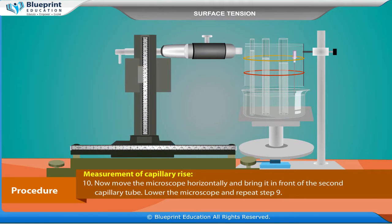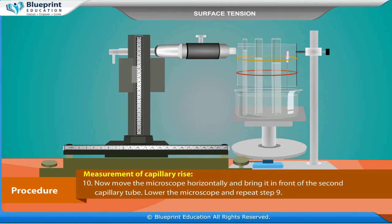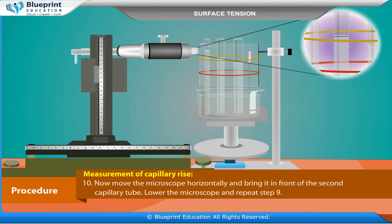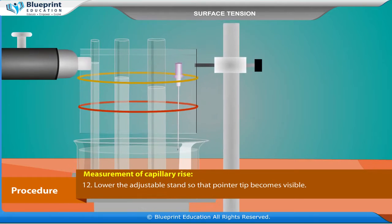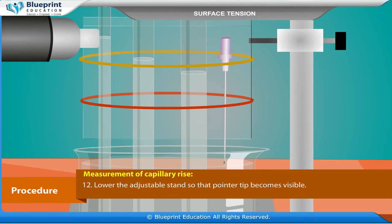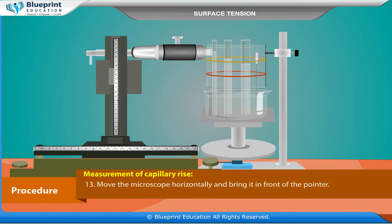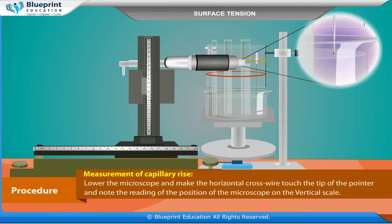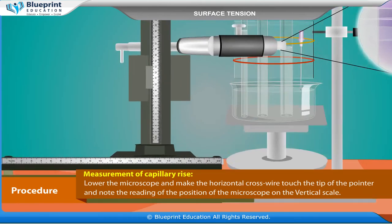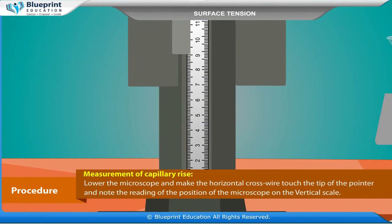Now move the microscope horizontally and bring it in front of the second capillary tube. Lower the microscope and repeat the previous step. Repeat for the third capillary tube as well. Lower the adjustable stand so that the pointer tip becomes visible. Move the microscope horizontally and bring it in front of the pointer. Lower the microscope and make the horizontal cross wire touch the tip of the pointer, and note the reading of the position of the microscope on the vertical scale.